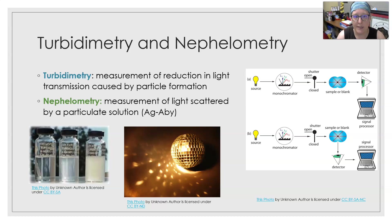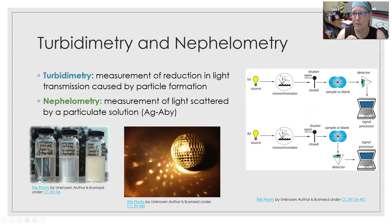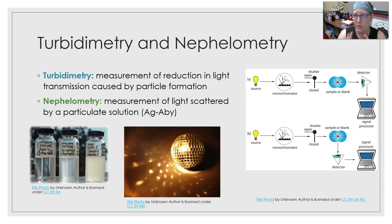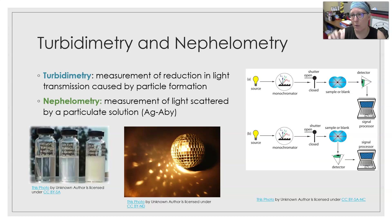Nephilometry is the measurement of light scattered by a particular solution — particles suspended in solution scatter the light. A good illustration is a disco ball: you shine light on it and it scatters light all over the place. Similarly in nephilometry, the light bounces off antibody-antigen particles. You have a light source, possibly a monochromator, then through a shutter and the sample, and the scattered light is detected at an angle — you can detect it at a 90 degree angle, very similar to fluorometry.